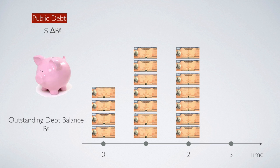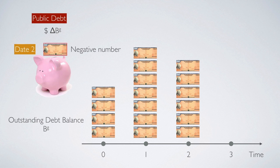For example, on day 2, if government decided to take away one unit of debt, which means that government already paid back that unit of debt. In this case, we would say that the new public debt issuance is a negative number. So the change of government bonds, delta BG, is a negative number. Therefore, by the end of day 2, the outstanding balance will be lower than day 1.